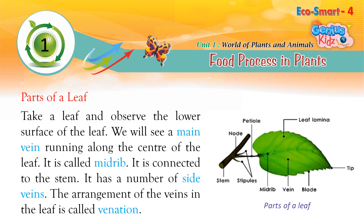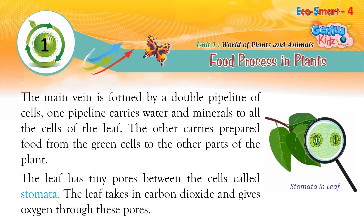Take a leaf and observe the lower surface. You will see a main vein running along the center of the leaf, called the midrib, which is connected to the stem. It has a number of side veins. The arrangement of veins in the leaf is called venation. The main vein is formed by a double pipeline of cells — one pipeline carries water and minerals to all the cells of the leaf, and the other carries prepared food from the green cells to other parts of the plant.